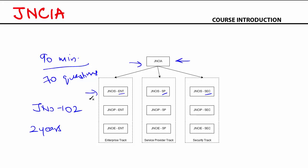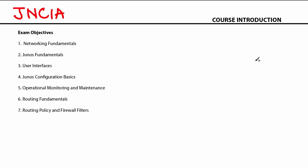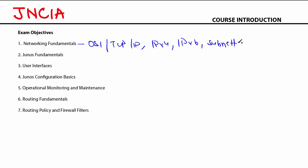Let's now talk about the course outline. We have the exam objectives listed here, and as you can see, we can divide the exam topics into seven points. Number one is networking fundamentals, where we're going to talk about really basic stuff like the OSI model, the TCP/IP model, IPv4, IPv6, and the very important concept of subnetting. That's why this course is also a great place to start if you are new to networks.